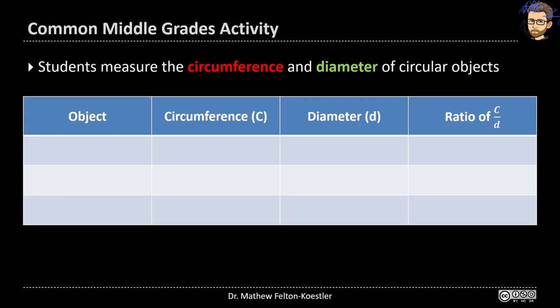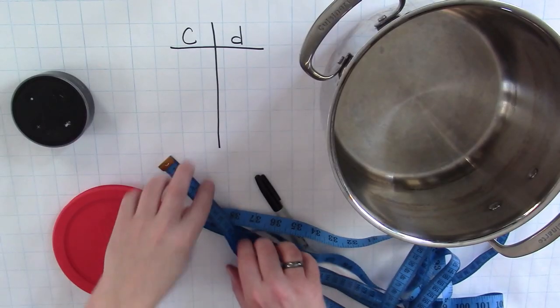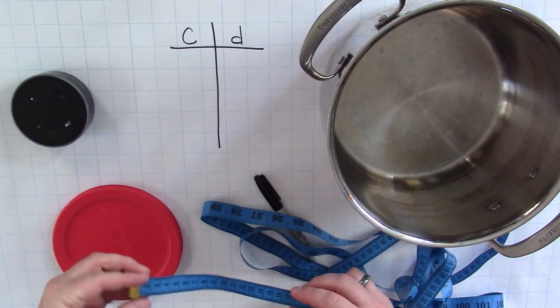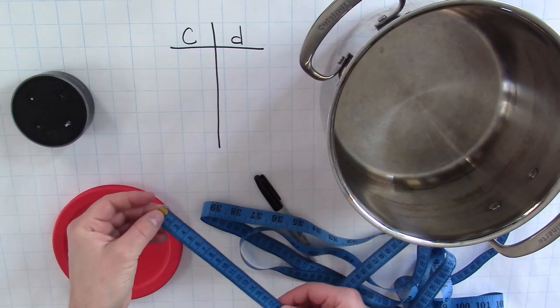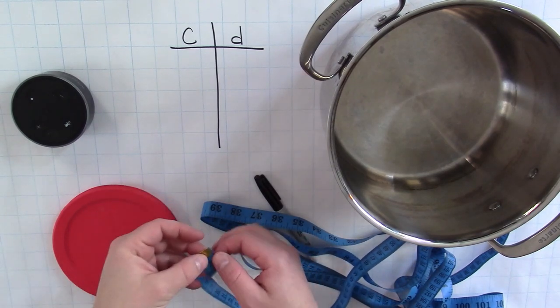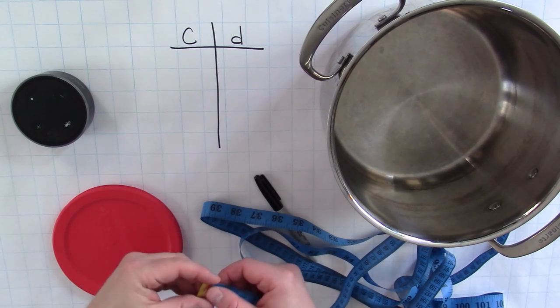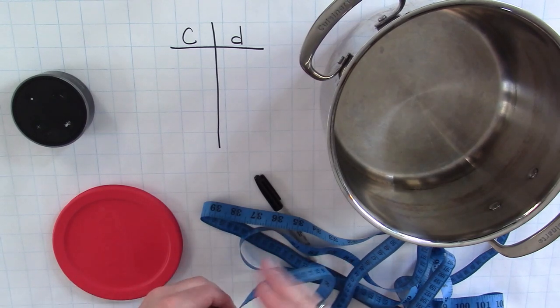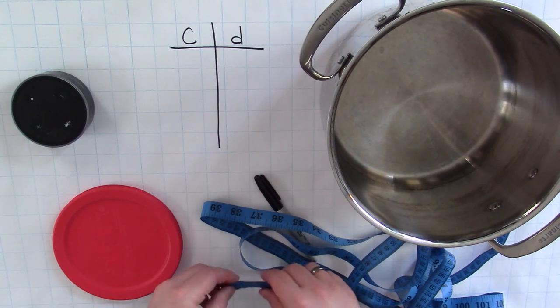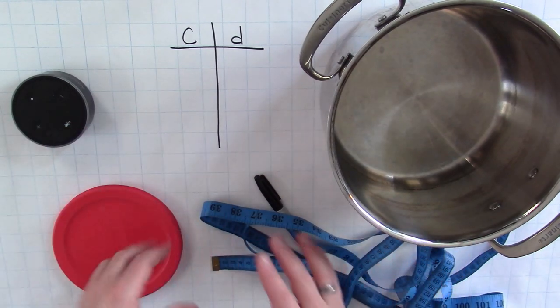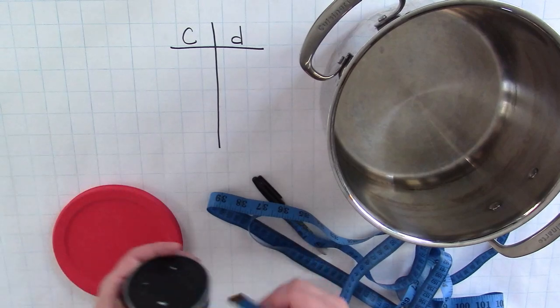Alright, so let's go measure some objects. I've got my flexible tape measure here which has inches on one side and centimeters with millimeter marks on the other side. I much prefer the metric side because it makes dealing with fractions or decimals a lot easier.